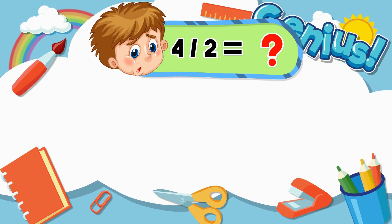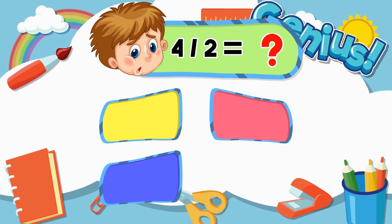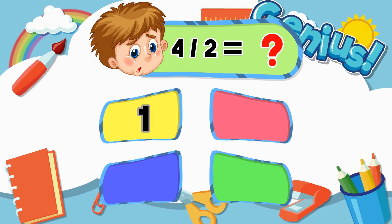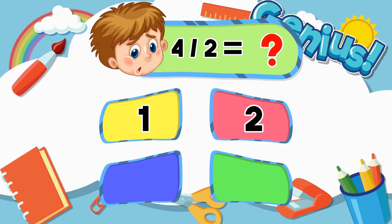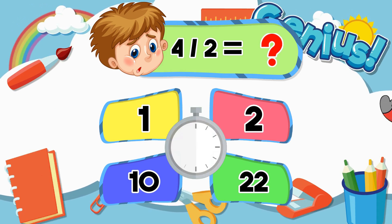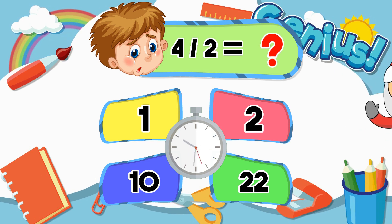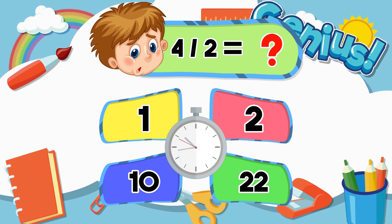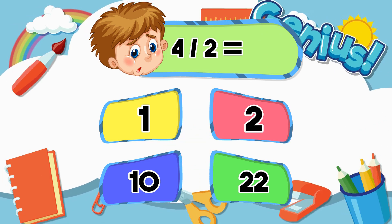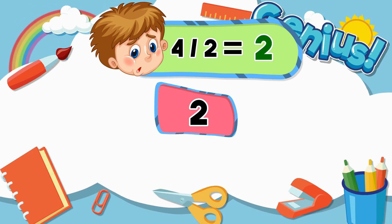What is 4 divided by 2? 1, 2, 10, 22. [Answer:] 2.